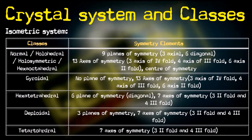Then there is the hextetrahedral class, in which six planes of symmetry are present — all diagonal planes. The number of planes has come down from nine to six compared to the normal class. There are seven axes of symmetry: three twofold and four threefold axes of symmetry.